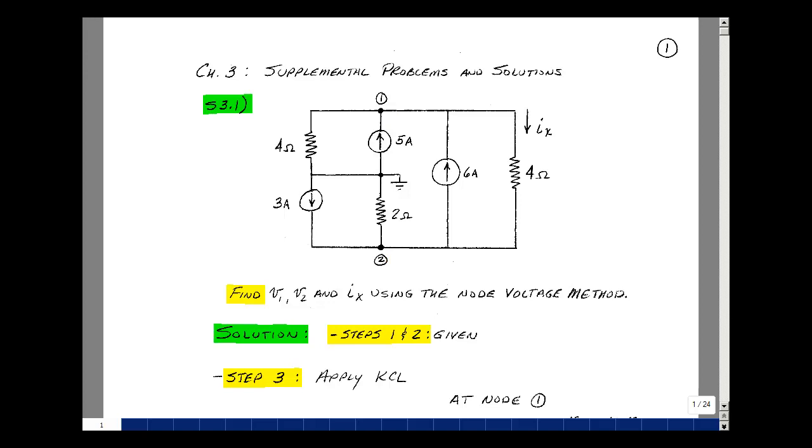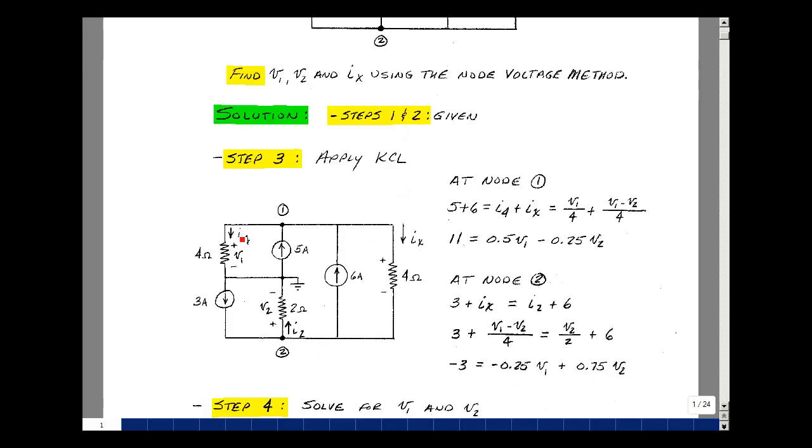Step 3 is to apply Kirchhoff's current law. Now, in order to do that, I need to assign current to each element. In this 4 ohm resistor, I'm going to call this current I4, and the current in this 2 ohm resistor, I2. Pick it in any direction you want. I'm just going to solve for it once you pick it.